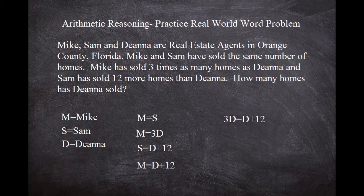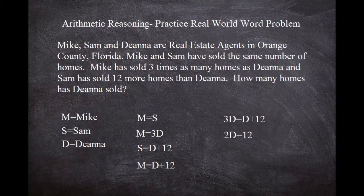Now we just need to isolate D. Starting with 3D equals D plus 12, subtract D from both sides: 3D minus D gives 2D, and D minus D gives zero, leaving 2D equals 12. Divide both sides by 2 and we get D equals 6. So Deanna sold 6 homes.